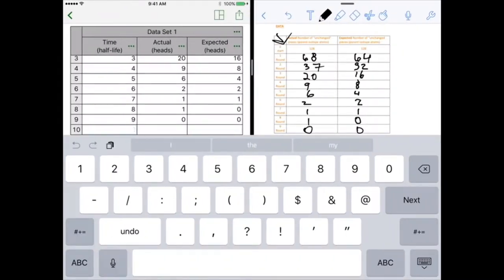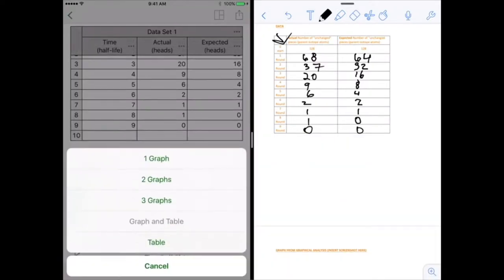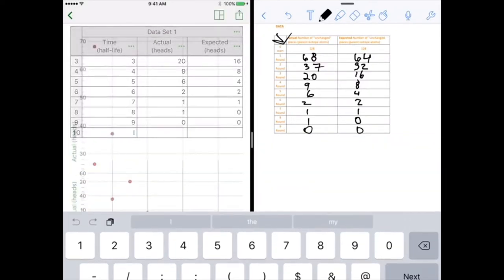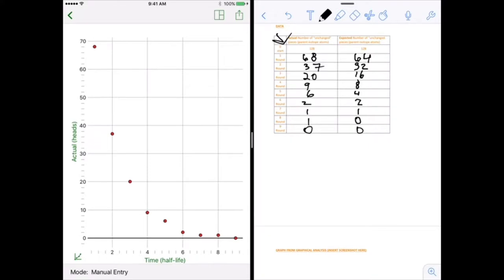Once I'm done with this, I can actually view it as a graph. I'll go view one graph, and I want to make sure that I check my expected. You should have actual and expected checked. This is showing our decay curve for our radioactive decay.